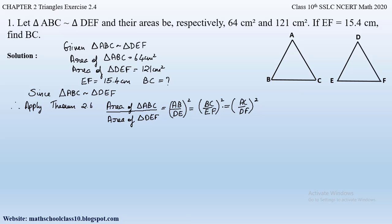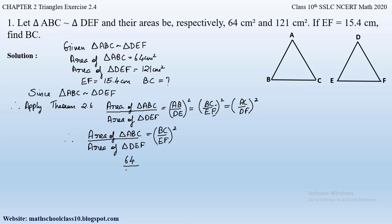Since we are given the areas of both triangles and the value of side EF, and we need to find BC, we take the ratio involving BC and EF. Therefore: area of triangle ABC / area of triangle DEF = (BC/EF)². Substituting: 64/121 = (BC/15.4)².